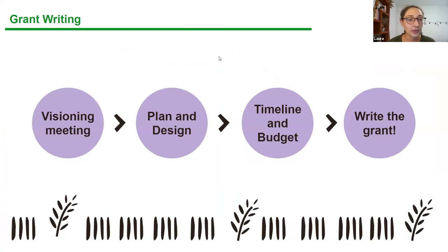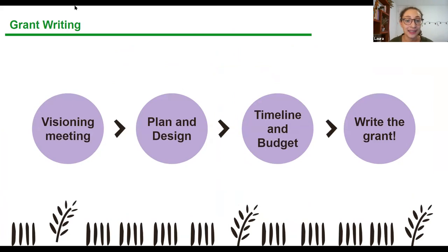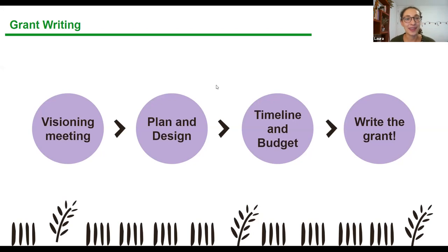When you are ready to write a grant, you're going to go through a few steps in order to prepare yourselves and make sure that you know what you're asking for and how to ask for it. The first step to any grant writing process is to have a visioning meeting with yourself and the other stakeholders. If you're working on an outdoor classroom or a school garden, you'll want to include teachers, parents, school administration like principals or vice principals, as well as custodians — everyone who's going to be involved in this project. You want them all to have a voice in the vision. Sometimes it takes more than one visioning meeting to figure out what it is you want to create at your school. Once you have that big vision, you'll nail down all the details, come up with your plan and the design of your project.